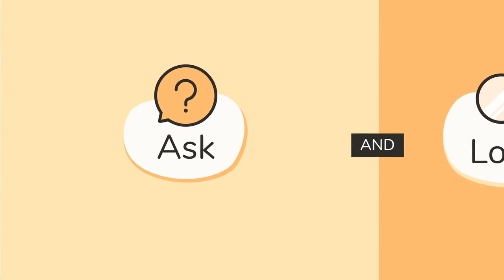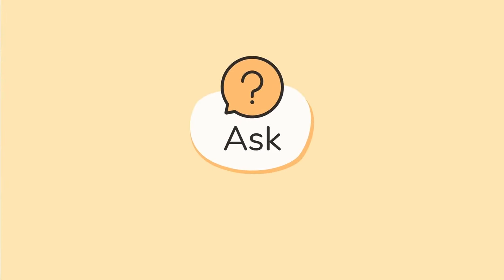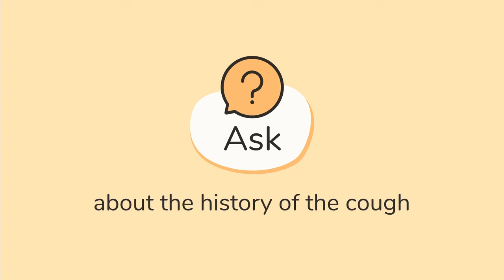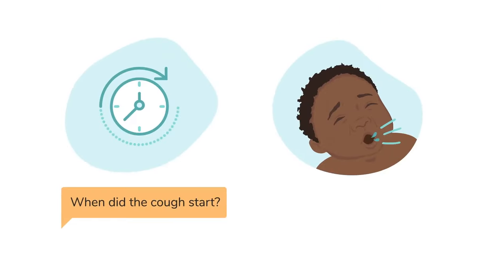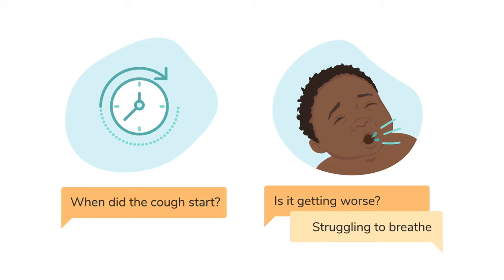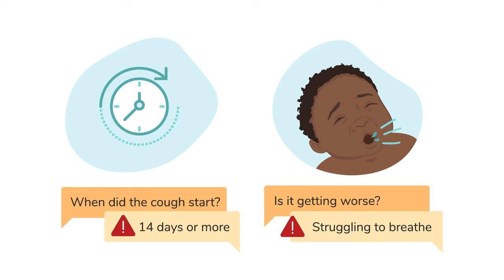Let's start with the first part: Ask. Number one — find out more about the history of the cough. You can ask: When did the cough start? Is it getting worse? A cough that is getting worse can be more serious, especially if the child starts struggling to breathe. Also, according to the World Health Organization and UNICEF, a cough lasting for 14 days or more can be a danger sign as it might be a sign of TB.